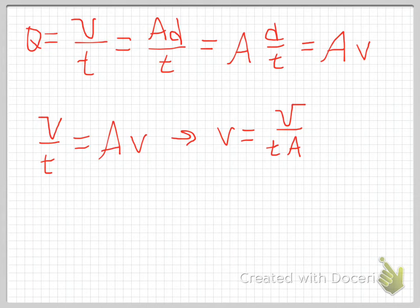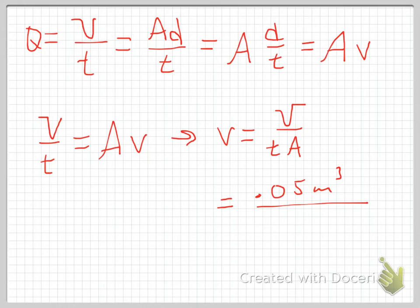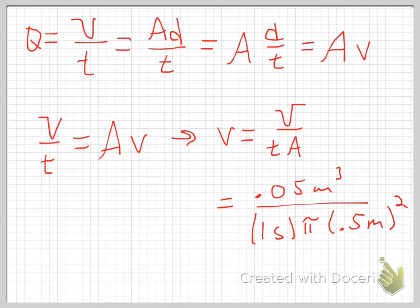So my velocity equals the volume per unit time divided by the area. For this particular situation, the volume is 0.05 cubic meters, flowing past a point in one second, and the area is pi times 0.5 meters squared. Unit-wise, I get cubic meters in the numerator and square meters in the denominator — those cancel, leaving meters per second.